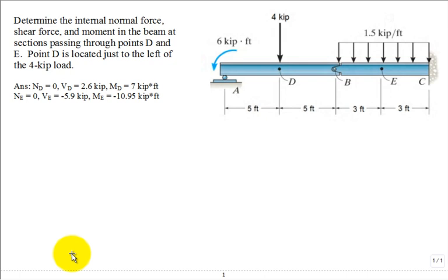Determine the internal normal force, that would be N for normal force, the shear force, that would be V, and the moment, bending moment M, in the beam at sections passing through points D and E.